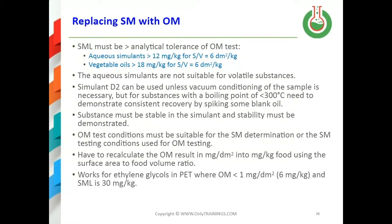This actually works for ethylene glycol and diethylene glycol in PET, where you often get an overall migration result of less than 1 mg per dm², which is equivalent to 6 mg per kg. The SML of the two glycols together is 30 mg per kg, so your overall migration result is telling you that you cannot possibly have 30 mg per kg of glycol migration.